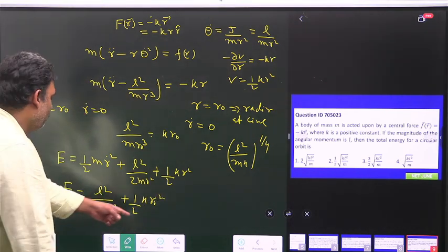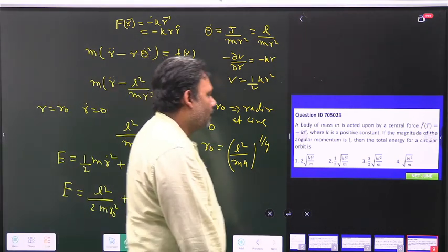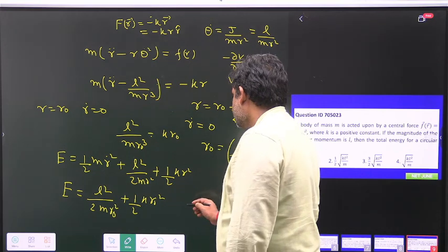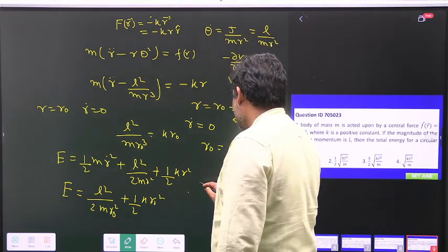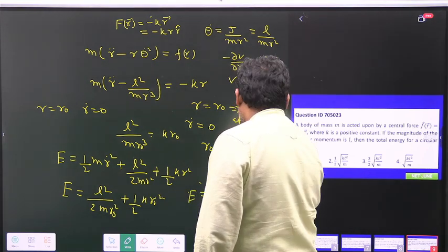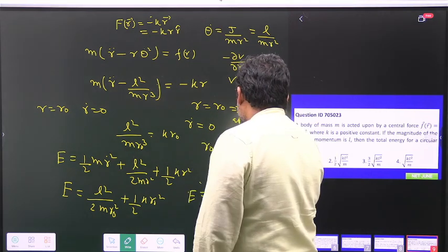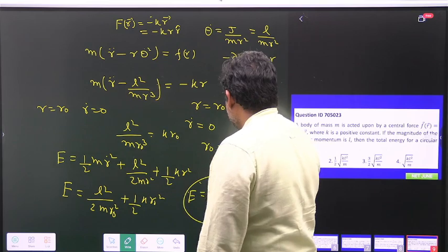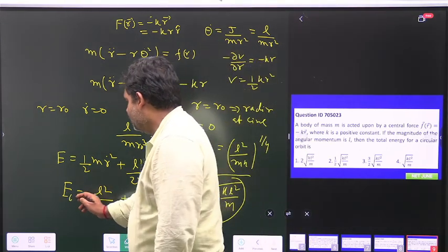So this is the value. Now we have to put the value of r naught and we will get the answer. So when you put the value of r naught, you can put it here, then you will get E is equal to answer number 4, kl square upon m. Just put yourself with r, I can put r naught.